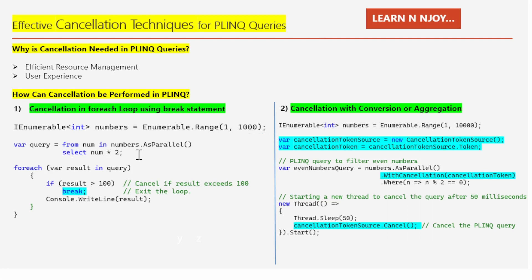Then there is a ForEach loop to iterate over the elements of the query sequence, where the `result` variable represents each element. Inside the loop, there is an if statement: if `result` is greater than 100, it breaks out of the loop using the break statement. Otherwise, it prints the result to the console window. That's what this program is doing.